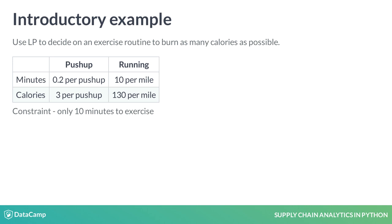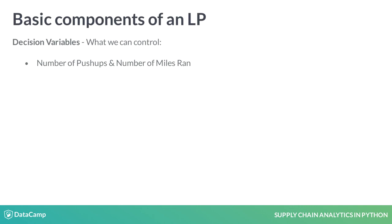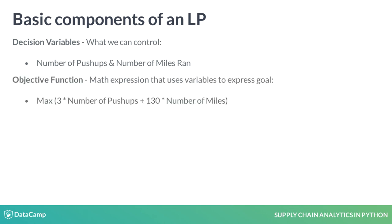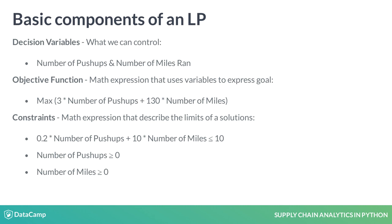Let's model this as an LP problem. First, we decide on the decision variables — in this case, the number of push-ups and miles ran. Next, the objective function captures the number of calories burned for each push-up and mile ran. Based on our chart, we add 3 times the number of push-ups to 130 times the number of miles. We want to choose the combination of decision variables that maximizes this function. Finally, we need to express our constraints. The first constraint captures how many minutes it takes to perform the exercise, which must be less than or equal to 10 minutes. We also want to ensure our decision variables are not negative.